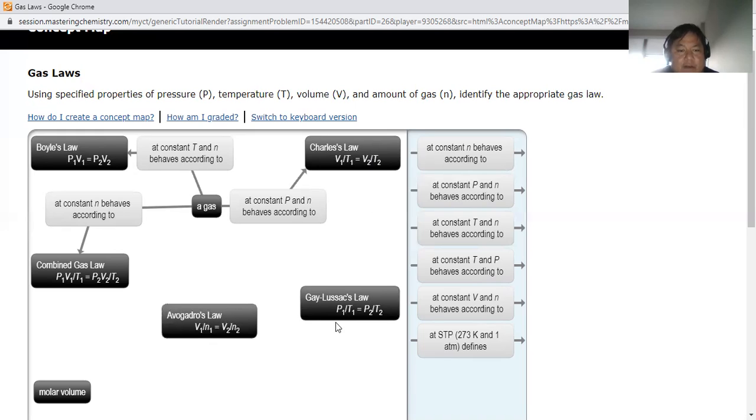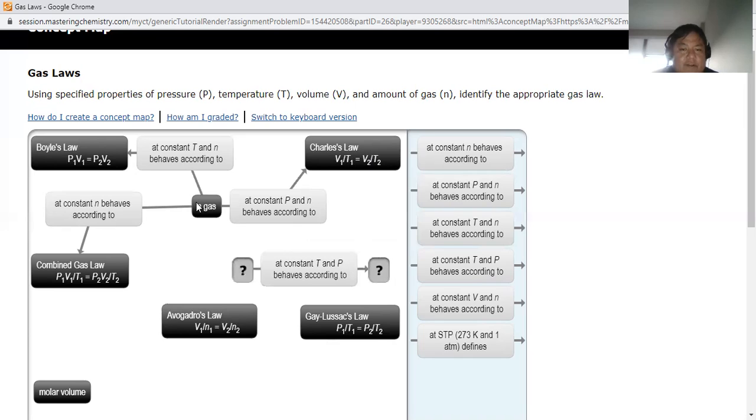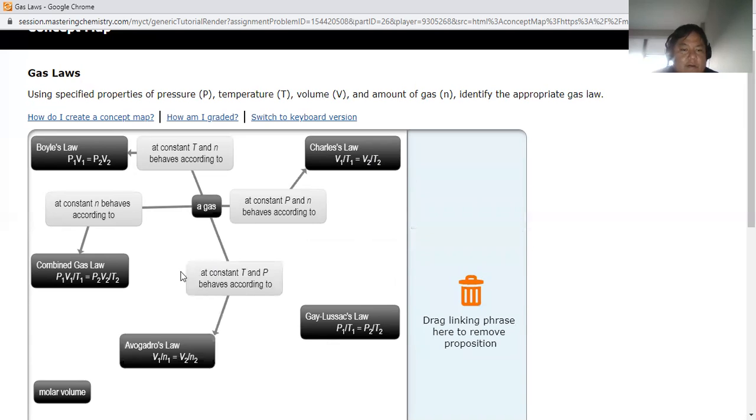All right, so now we have Gay-Lussac and Avogadro. Avogadro is volume and moles, which means temperature and pressure have to be constant. So then you go here, move you down here like that.